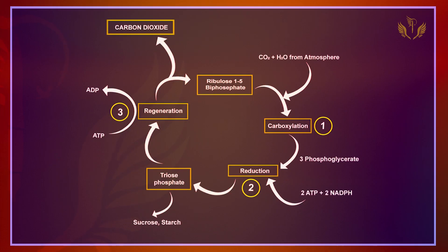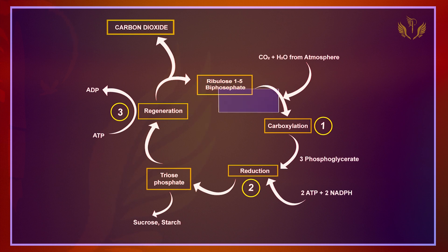On your screen there is a cycle written above: Ribulose-1,5-biphosphate. During Carboxylation, carbon dioxide and hydrogen are mixed from the atmosphere. This means Carboxylation is the fixation of carbon dioxide into a stable organic intermediate.